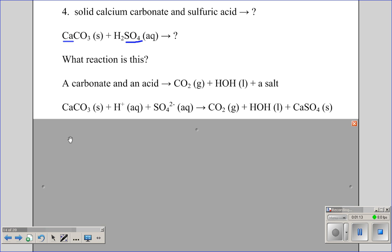So, I need to write this in the form that it is in the beaker. I've got my solid piece of calcium carbonate. My sulfuric acid is broken up into ions, hydrogen ions and sulfate ions. I'm going to make my carbon dioxide gas in my water. And my salt, calcium sulfate.